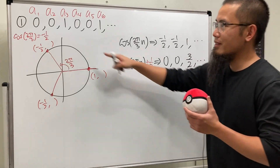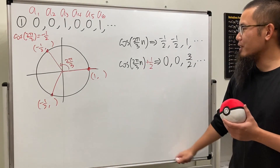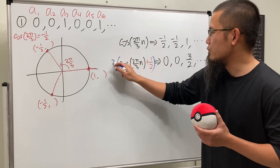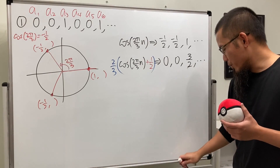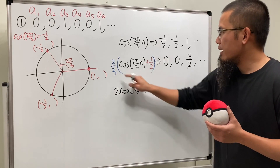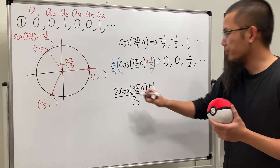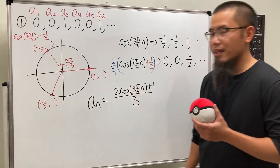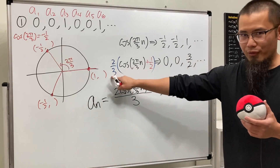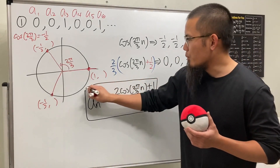These are good, but we do not want 3/2 — we want 1. So we can multiply the whole formula by the reciprocal of 3/2, which is 2/3. When we do that, we get the formula: (2·cosine(2π/3·n) + 1) / 3. This will produce 2/3 times 0, then 0, then 2/3 times 3/2 which is 1, and so on. So ladies and gentlemen, this is the formula for that sequence.